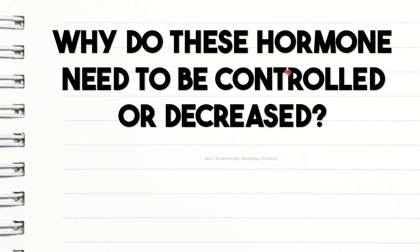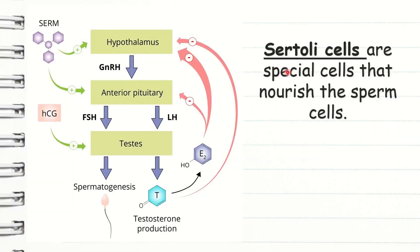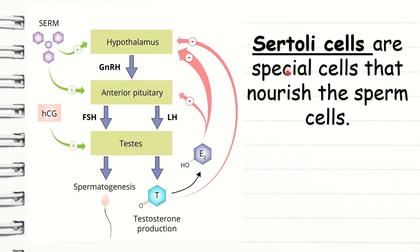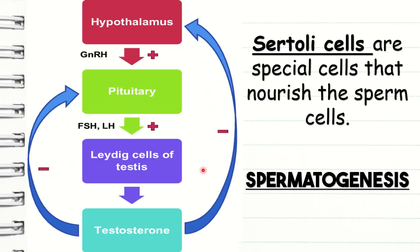But why do these hormones — GRH, FSH, and LH — need to be controlled or decreased? Well, when males enter puberty, the hypothalamus in the brain starts secreting GRH, which makes the pituitary gland, also in the brain, start releasing FSH and LH for the first time. FSH goes to the testis to stimulate Sertoli cells. Sertoli cells are special cells that nourish the sperm cells, and are produced by the testis. Thus, spermatogenesis is started. LH also goes to the testis to stimulate another group of cells called Leydig cells, in order to make and release testosterone into the testis and the bloodstream.